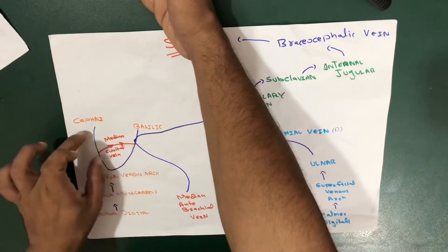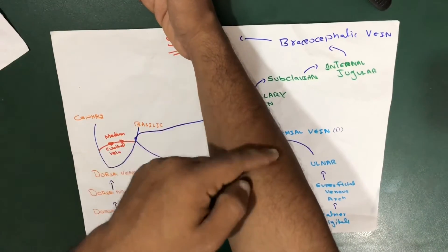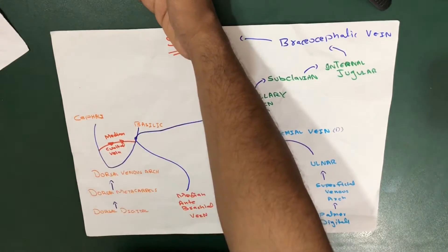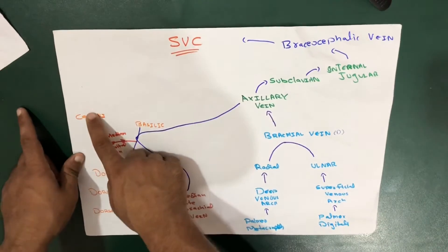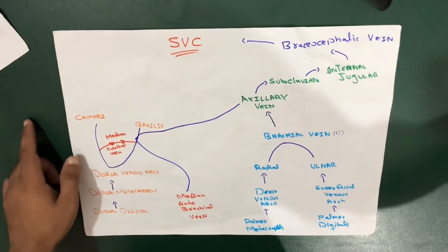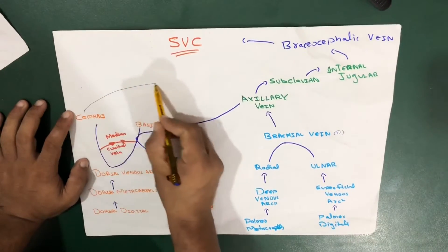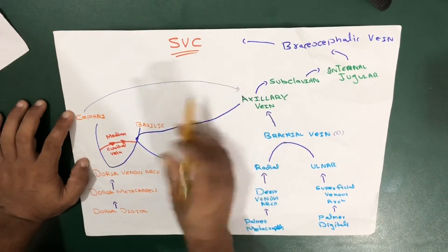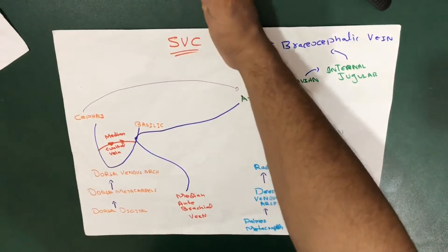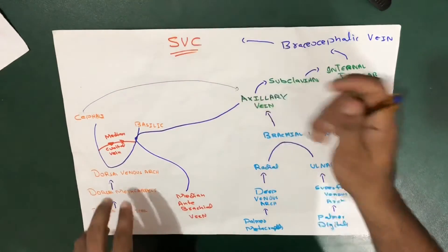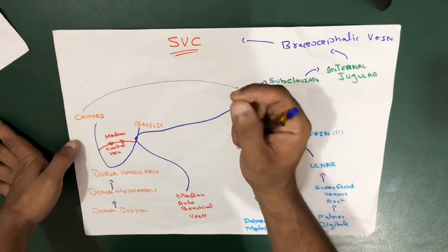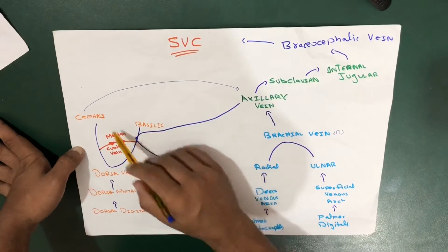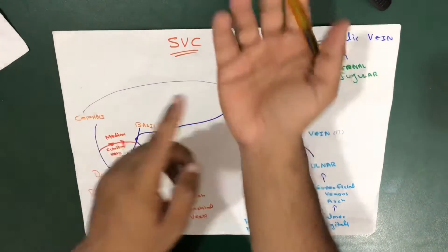After the median cubital vein branch, the cephalic vein continues upward and directly joins the axillary vein. Now let's talk about the basilic vein, which is on the medial side, also rising upward.